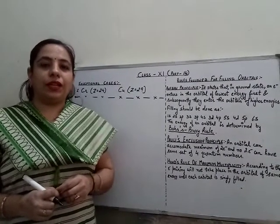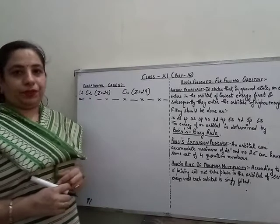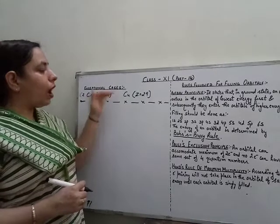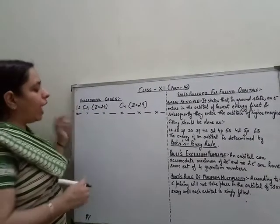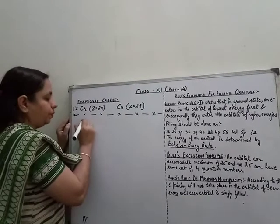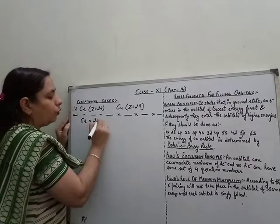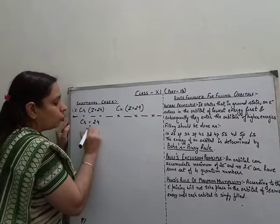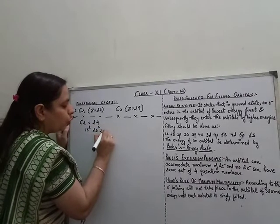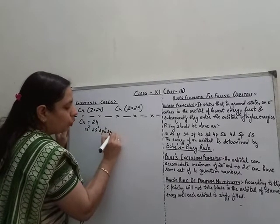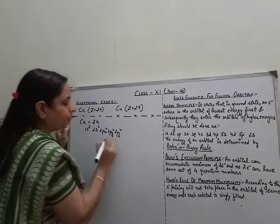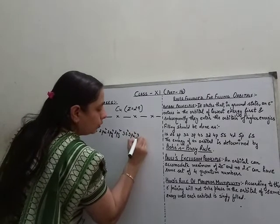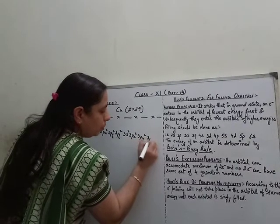Now we are going to discuss the exceptional cases of chromium and copper. For chromium with atomic number 24, if we write the electronic distribution, it is 1s2, 2s2, 2px2, 2py2, 2pz2, 3s2, 3px2, 3py2, 3pz2 — accommodating 18 electrons so far.